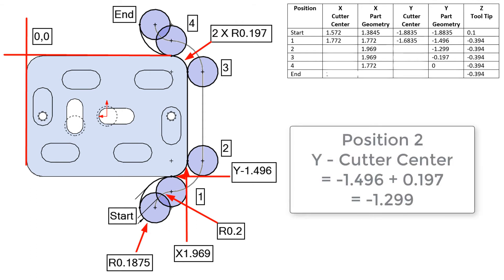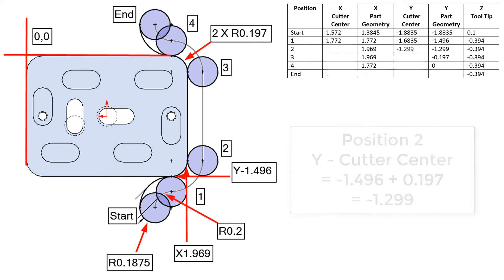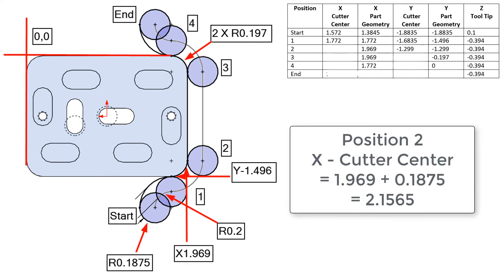At position 2, the Y cutter center will be the same as the Y of the part geometry: negative 1.299. The X for the cutter center will be the part length, 1.969, plus the cutter radius, which equals 2.1565.